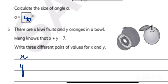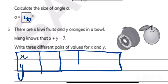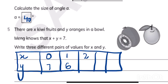Here you have to write three different pairs. X represents kiwis and Y represents oranges. The sum of both fruits should equal 7. If you have 0 kiwis, you can have 7 oranges. If you have 1 kiwi, you can have 6 oranges. If you have 2 kiwis, you can have 5 oranges, and so on.